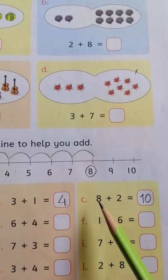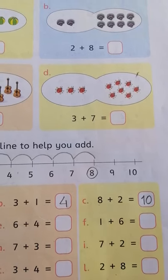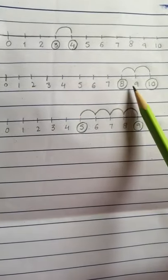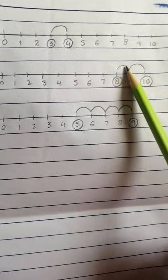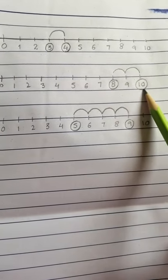In part C you can see there are 8 plus 2. So see the second number line 8 plus 2. So we start with 8 and here are 2 jumps. 9, 10. So we get 10.